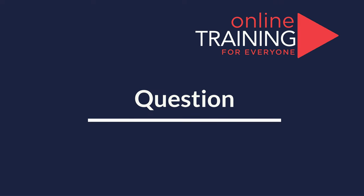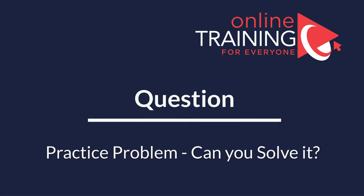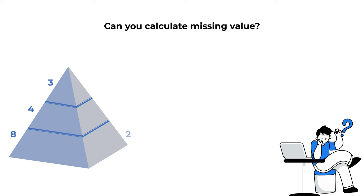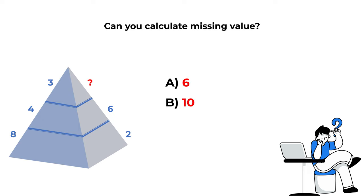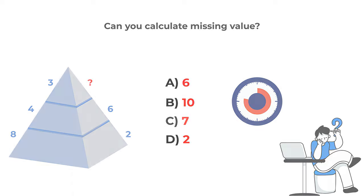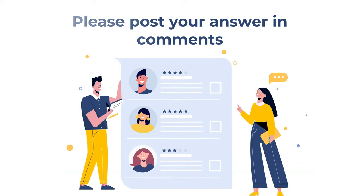Here's a practice question. You're presented with a triangle broken into three equal horizontal parts. On the left side, from bottom to top, you see numbers 8, 4, and 3. On the right side, you see numbers 2, 6, and one missing number. Select the missing number from four choices: A: 6, B: 10, C: 7, D: 2. Give yourself a little time and make sure to post your answer in comments so I can give you my feedback.